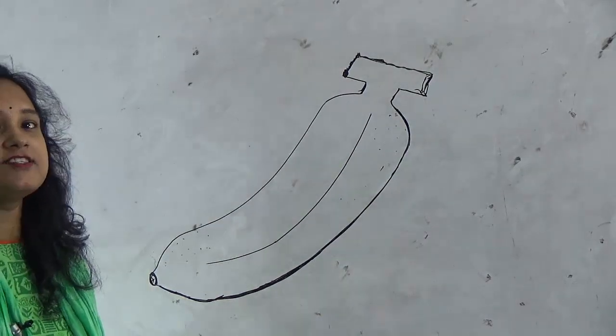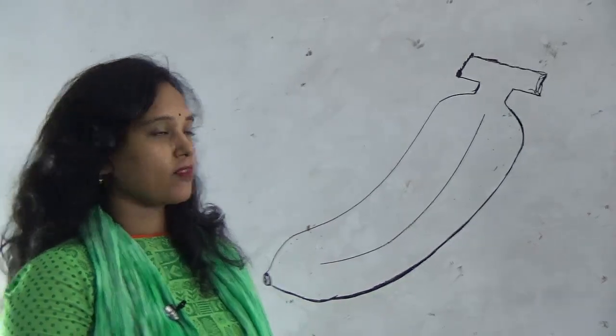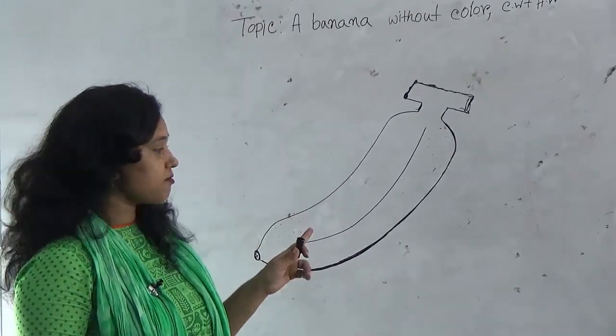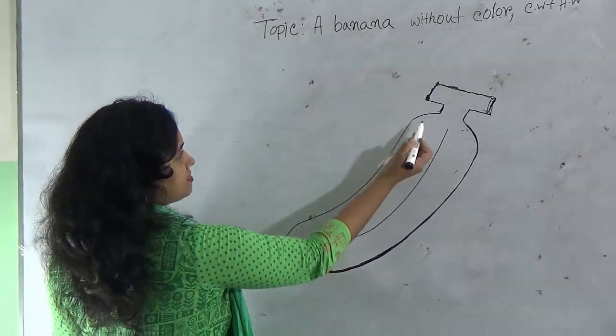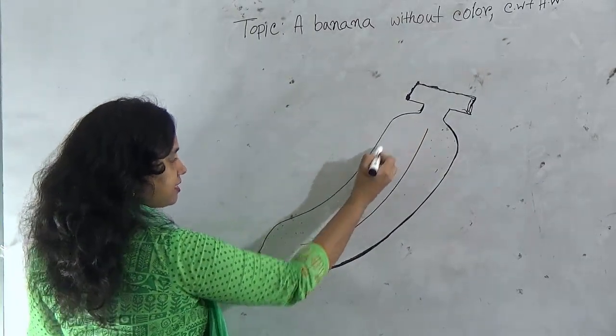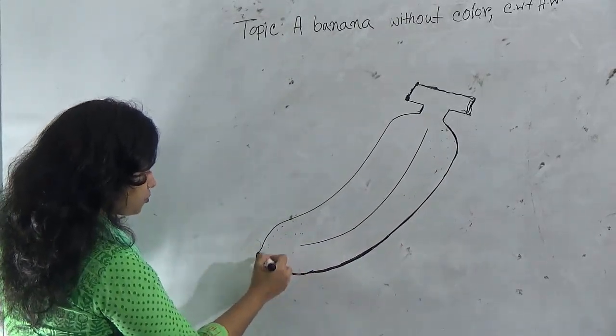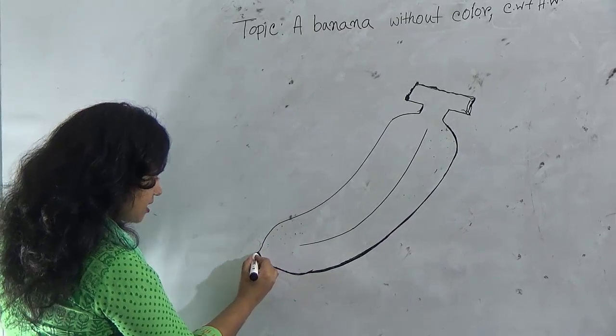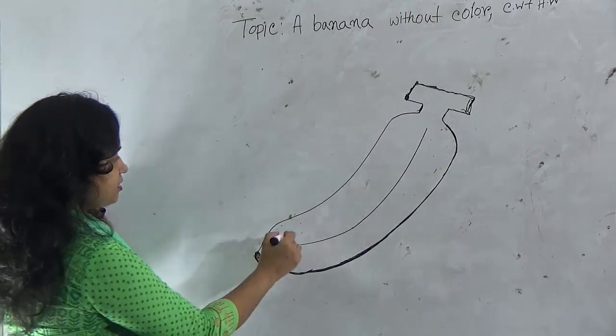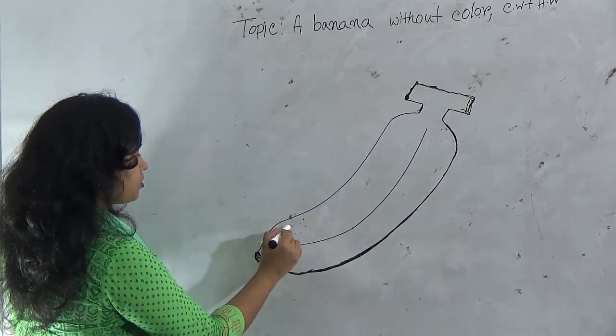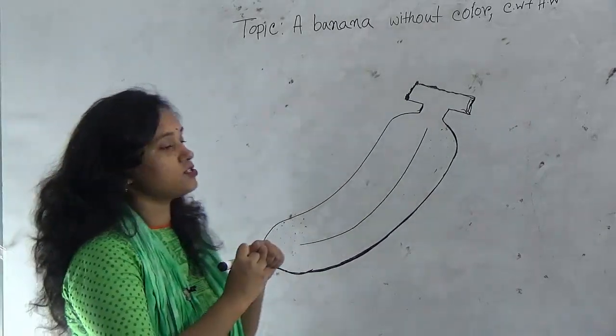Dear student, this topic is without color, so it's very easy for you. You should always practice at your home and remember this. As I already said, first I draw two lines, then give two curved lines and just join by a V or U, then give here a tiny oval and some lines and use here some dots. Okay, the banana without color.